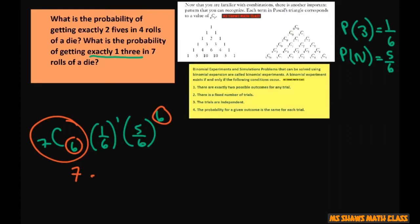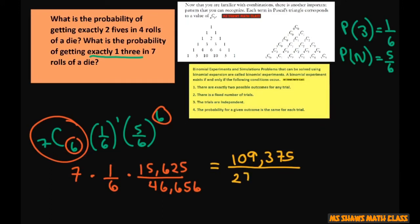So this is going to be seven times one sixth times 15,625 divided by 46,656. Now simplifying this, we're going to get 109,375 divided by 279,936.